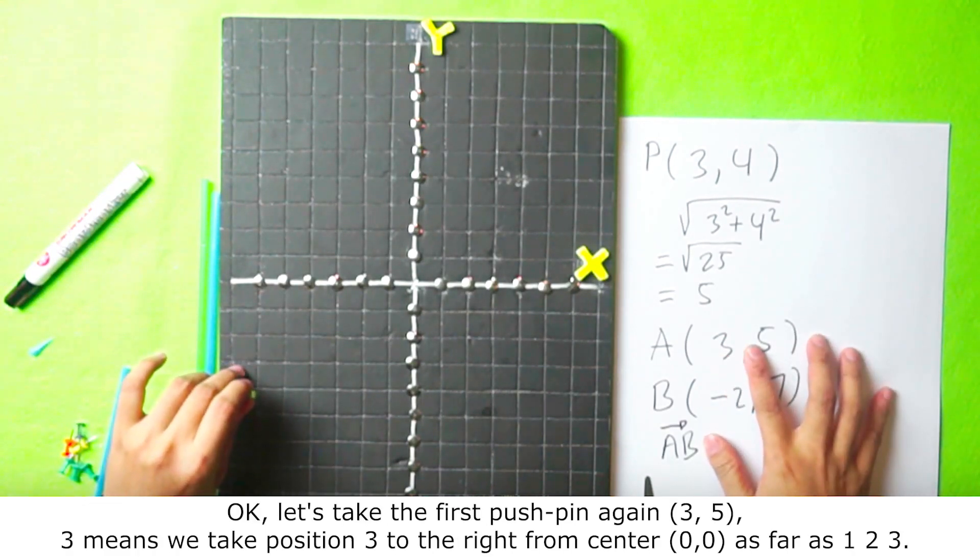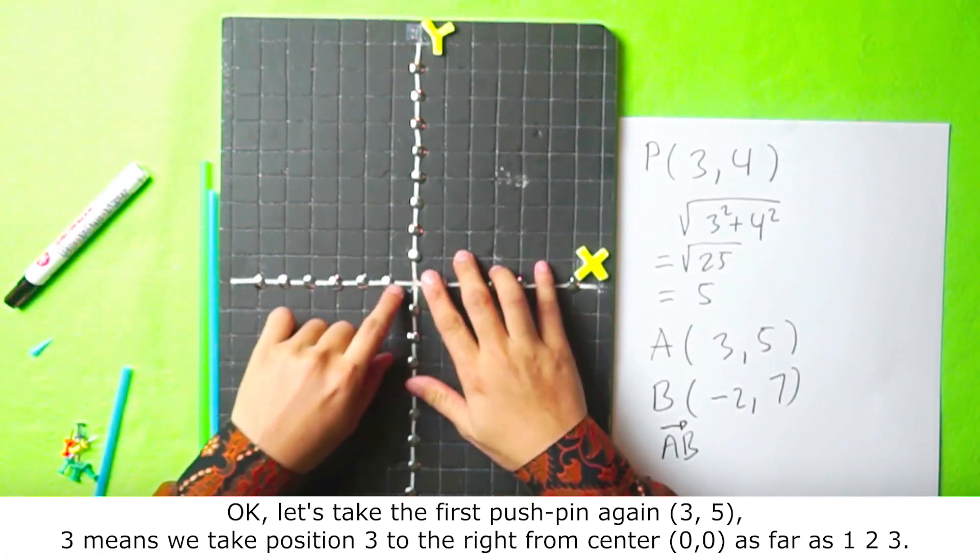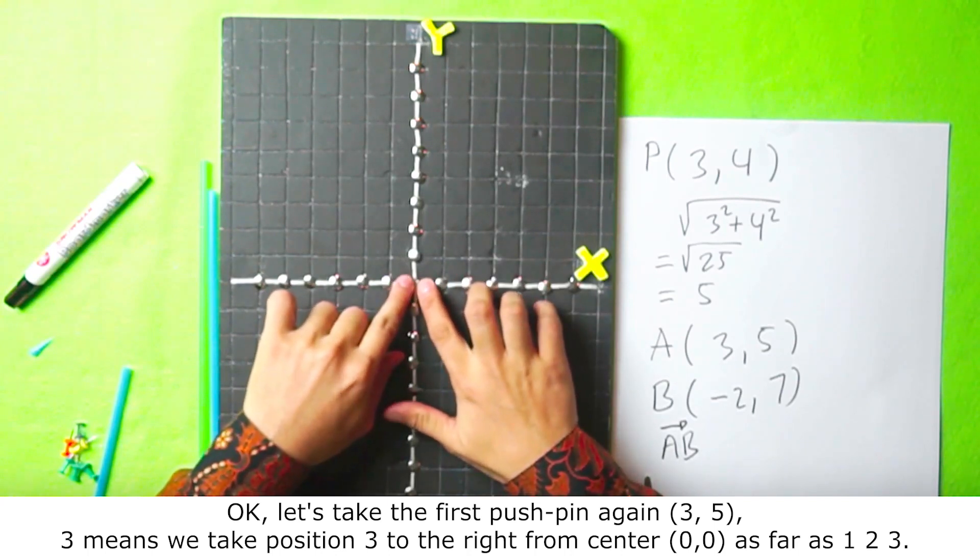Okay, let's take the first pushpin again. 3, 5. 3 means we take position 3 to the right from the center as far as 1, 2, 3.